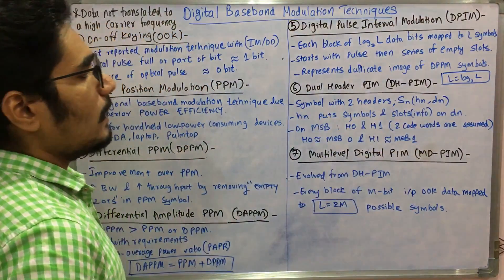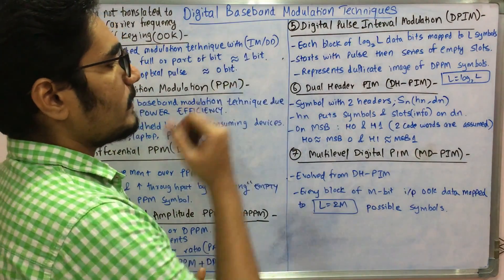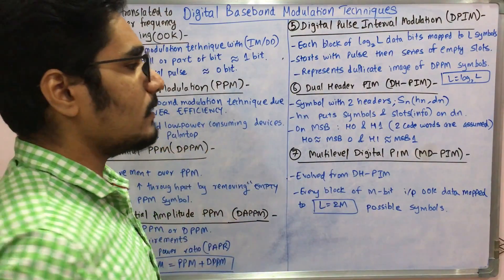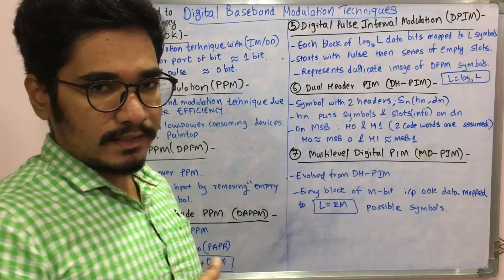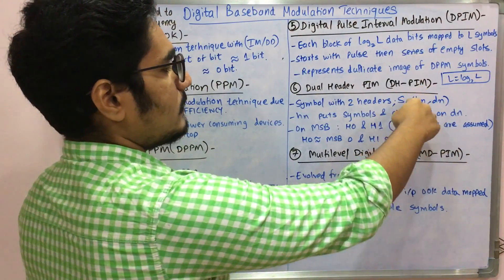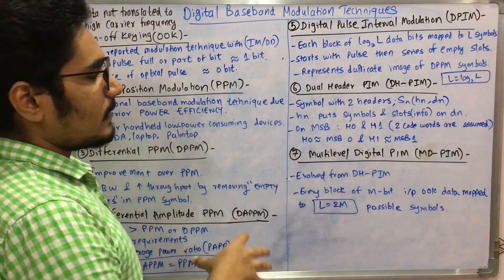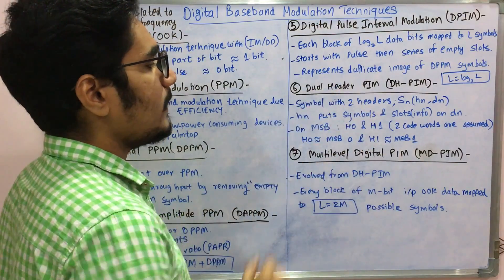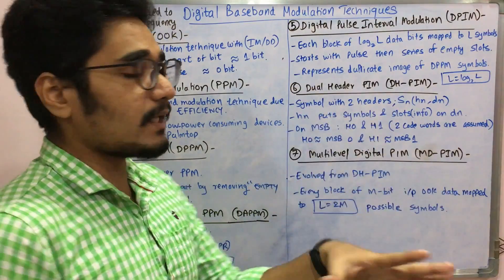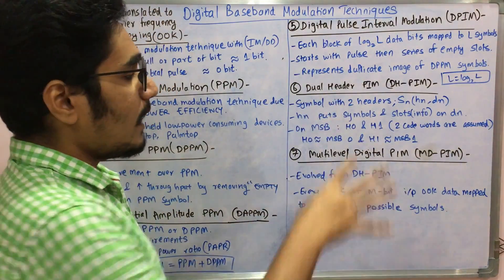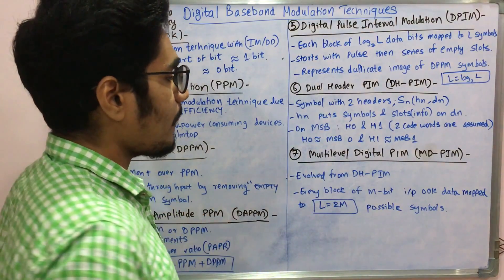The sixth technique is Dual Header Pulse Interval Modulation (DH-PIM). The signal has two headers: Hn and Dn. Hn is the first header, which puts the symbols and information slots onto Dn, which carries slot information and deposits it on the other header. It uses the most significant bit (MSB) and has two code words: H0 and H1. H0 represents an MSB of zero, and H1 represents an MSB of one.